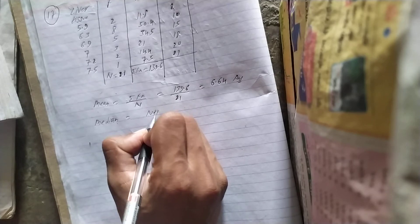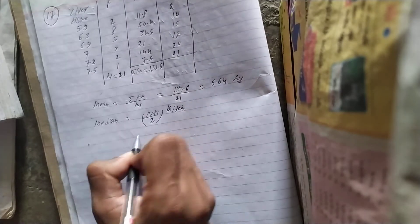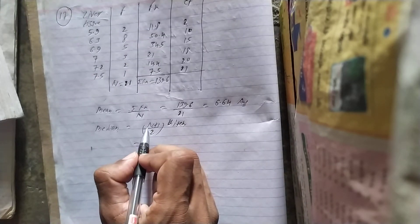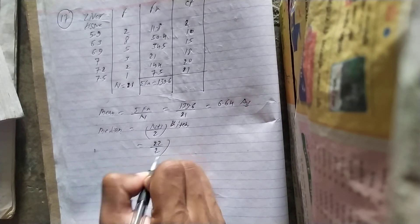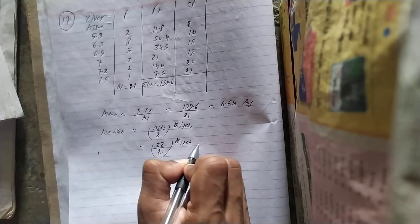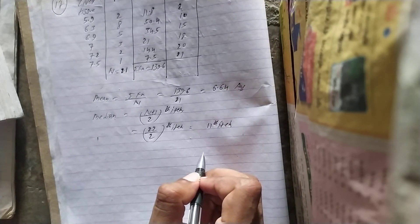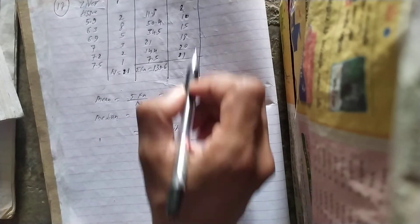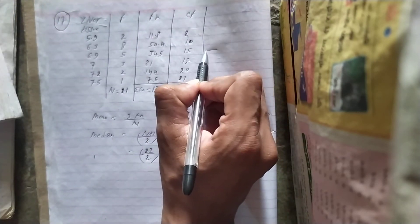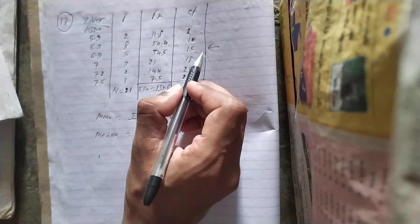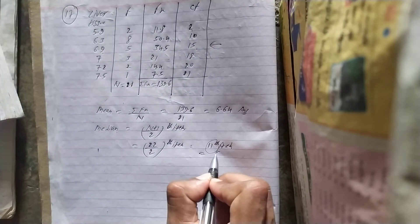Now we have a little bit of a median. So to find the median, we know the formula: n plus 1 by 2. So 21 plus 1 equals 22, divided by 2 — the 11th item. So the 11th item gives us 6.9. So the answer is 6.9.